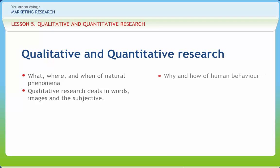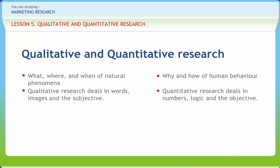Quantitative research focuses on the left brain — objective, comfortable with logic, numbers, and unchanging static data and detailed convergent reasoning rather than divergent reasoning. Quantitative research deals in numbers, logic, and the objective.